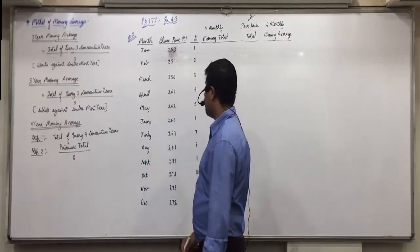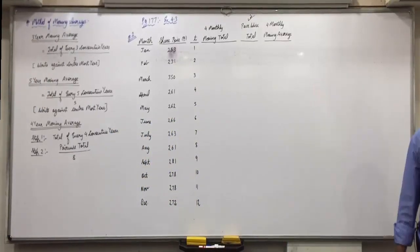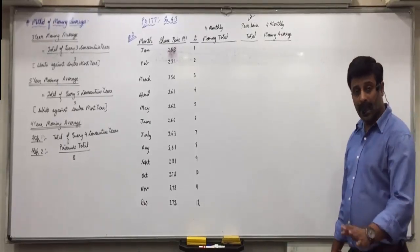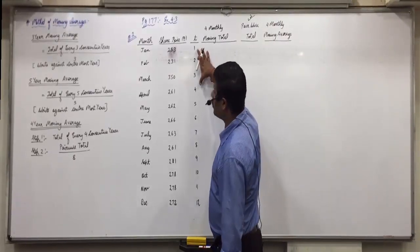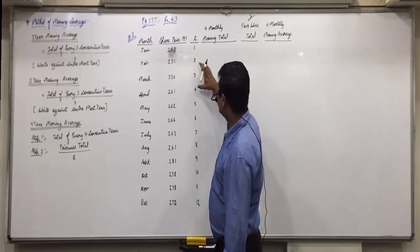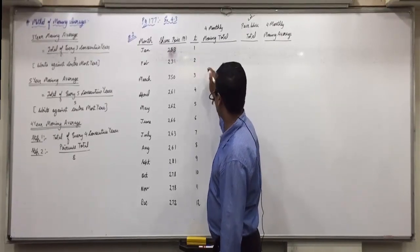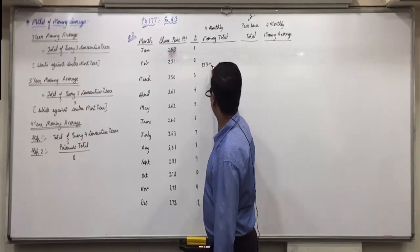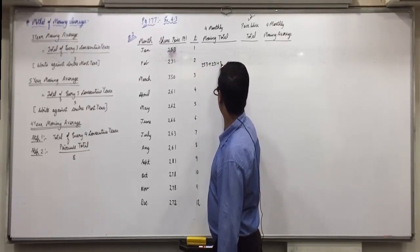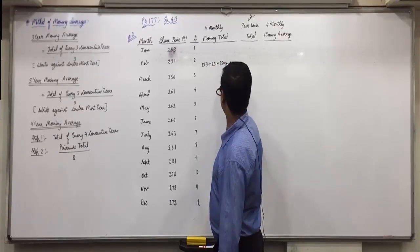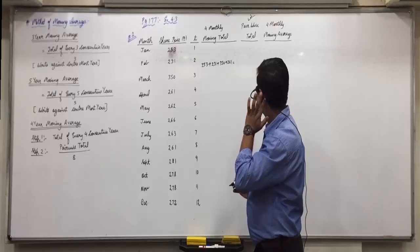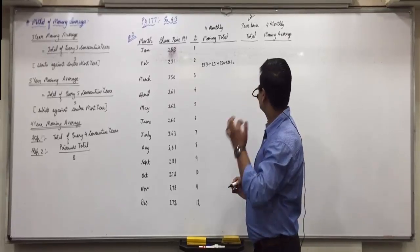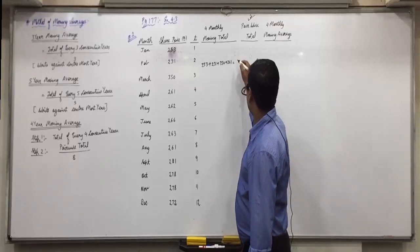Now understand this properly. Raise your hand — all still writing up till T? Now be attentive here. First of all, the first 4 values' total will come in between rows 2 and 3. So in between 2 and 3, write: 253 plus 231 plus 350 plus 261, which equals 1095.